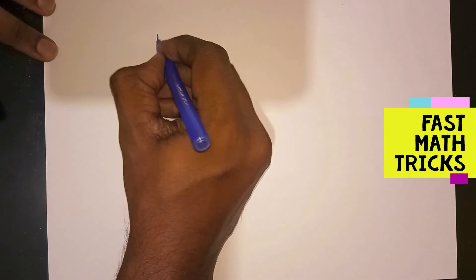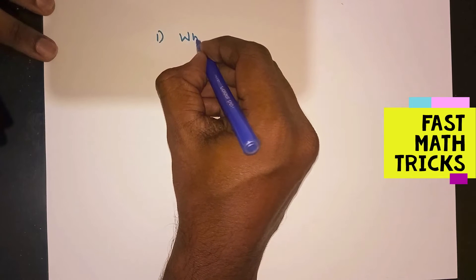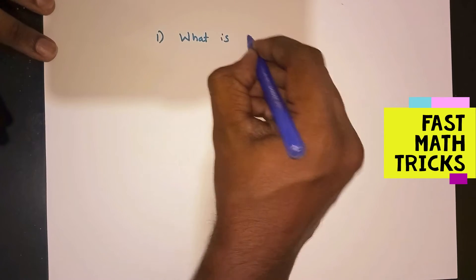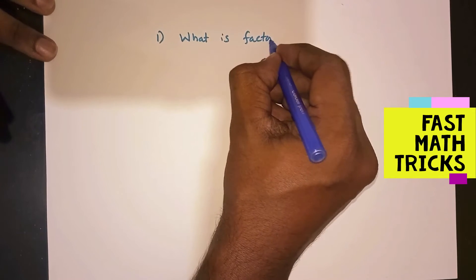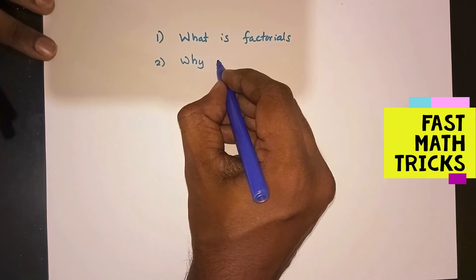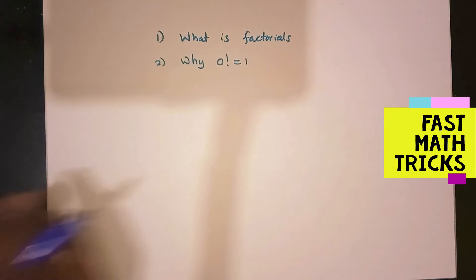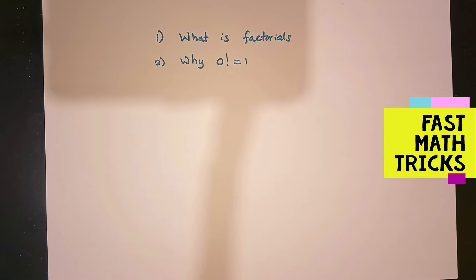Hi all, welcome to Matrix of Mandoc. In this session we discuss two questions: question number one, what is factorial? And question number two, why does factorial zero equal to one?